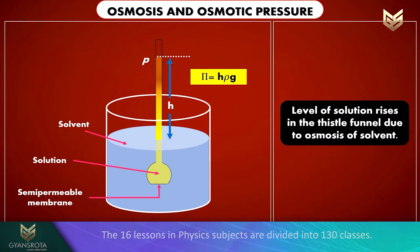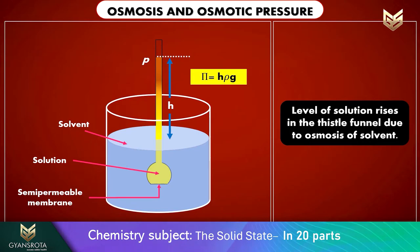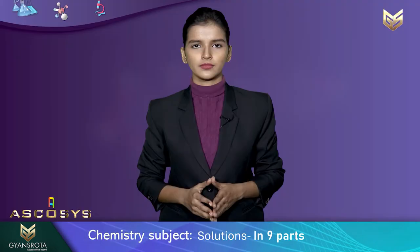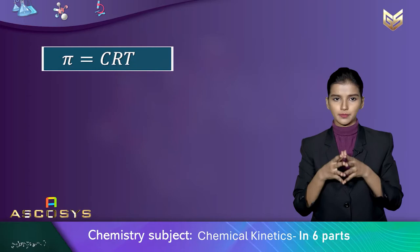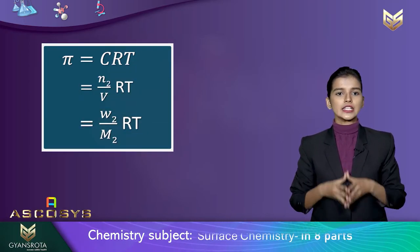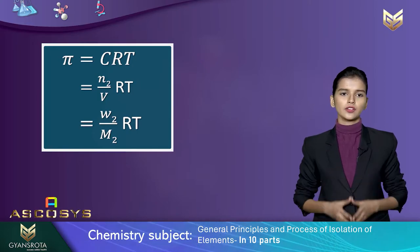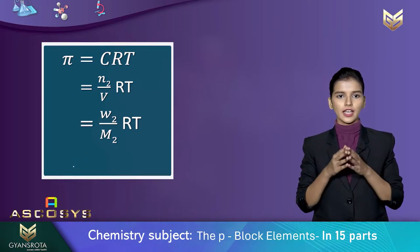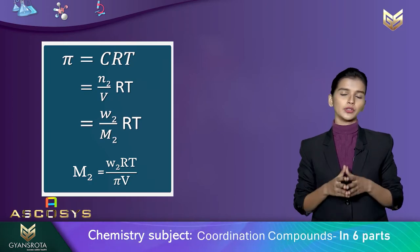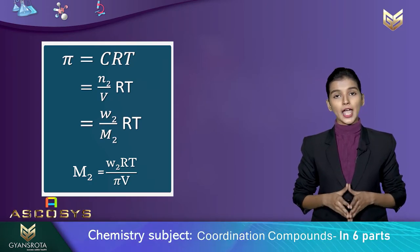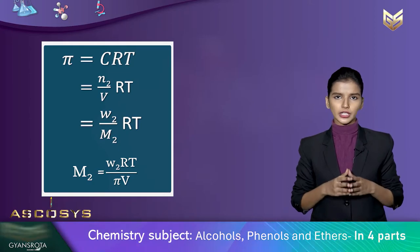If we apply a particular pressure in the funnel, then the movement of the solvent molecules can be stopped, and this pressure is known as osmotic pressure. The equation for osmotic pressure is pi equals cRT, where c is the concentration, T is the temperature, and R is the gas constant. Further derivation leads to the formula m2 equals w2 times R times T divided by pi times V, where w2 is the weight of the solute and m2 is the molar mass of the solute.